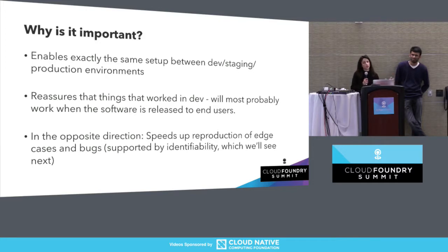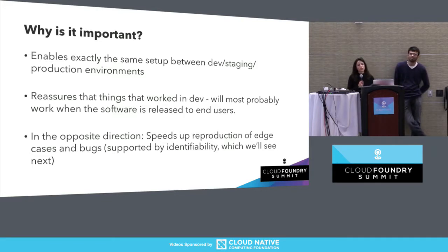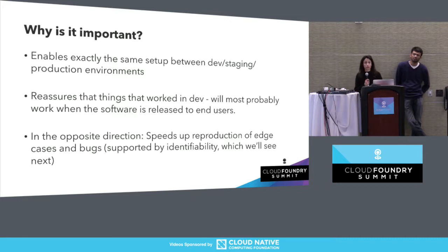It also goes the other way around. A bug that you notice in production is something you can quite easily take back and reproduce in a development station quickly, so that you can focus on fixing it.